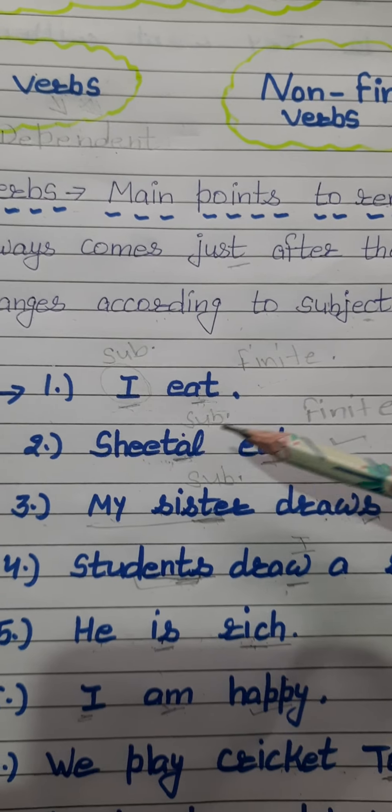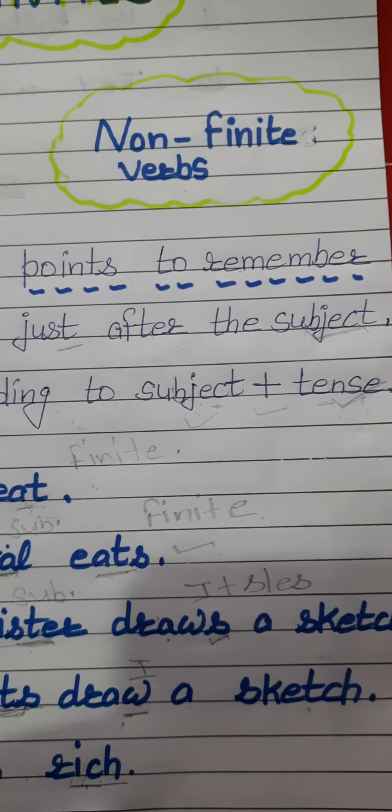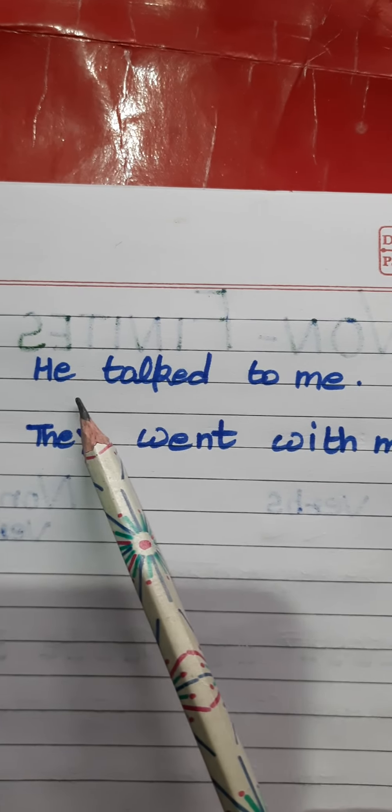We have learned how finite verbs change according to the subject. Now let's see how they change according to tense. In 'He talked to me,' we are talking about the past tense, so we apply the second form of the verb. 'He' is the subject and 'talked' is the finite verb. Similarly, in 'They went with me,' 'they' is the subject and 'went' is the finite verb, using the second form for past tense.